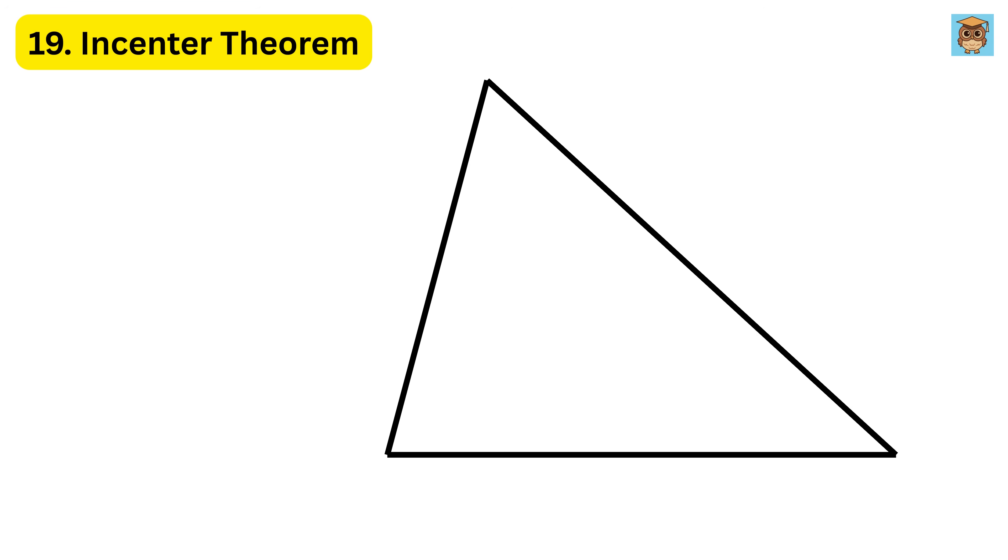19. Incenter theorem. The incenter theorem says that if you draw a line from each corner that splits the angle into two equal parts, these are called angle bisectors, they all meet at one point called the incenter. The incenter is the center of a special circle called the incircle, which fits perfectly inside the triangle and touches all three sides.